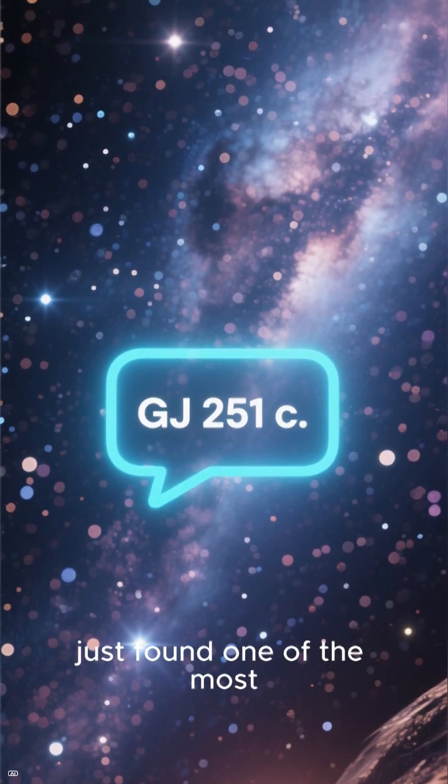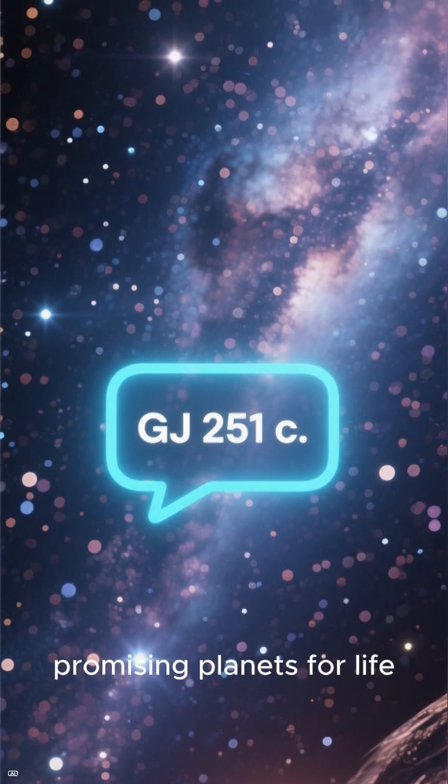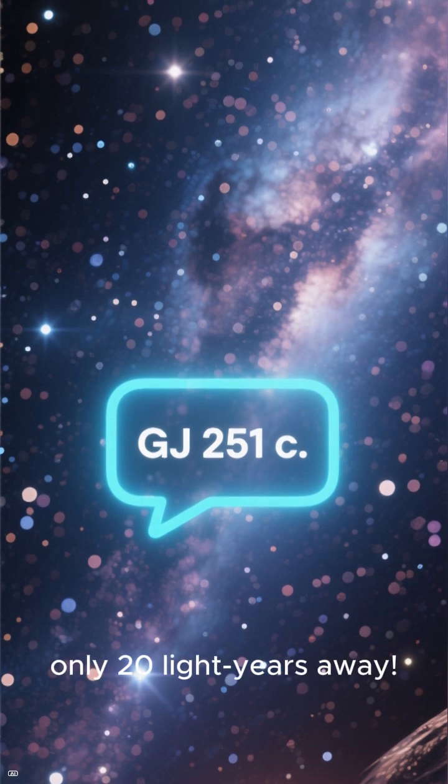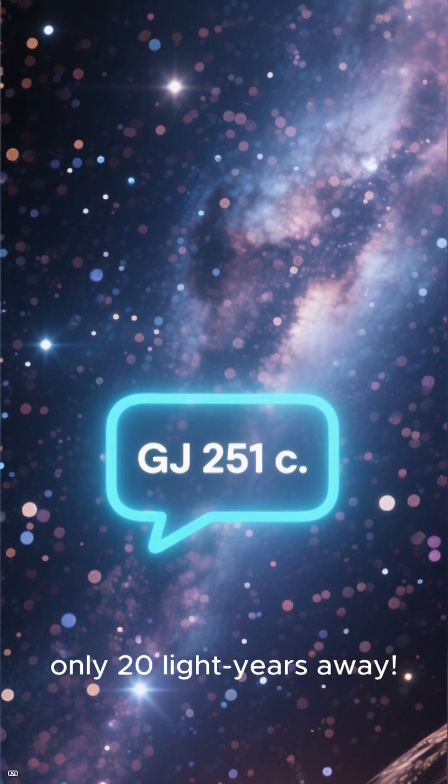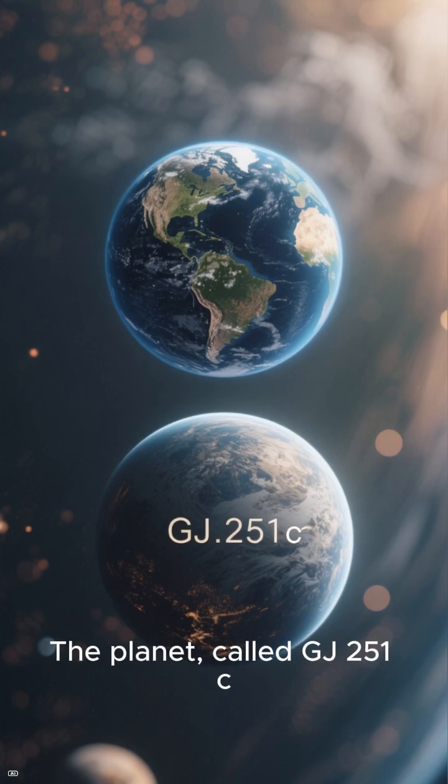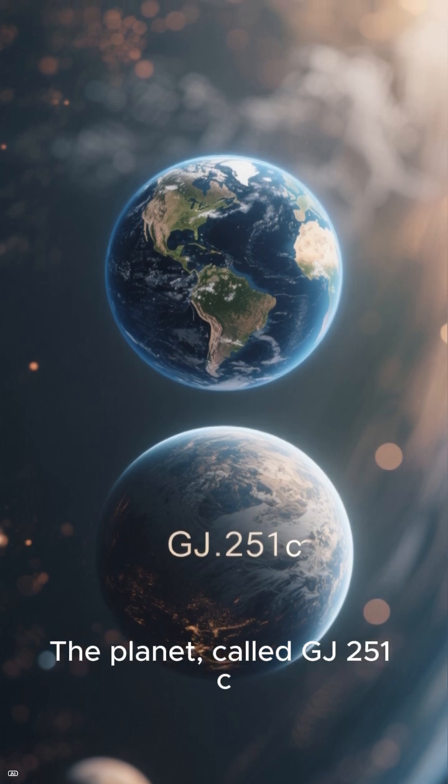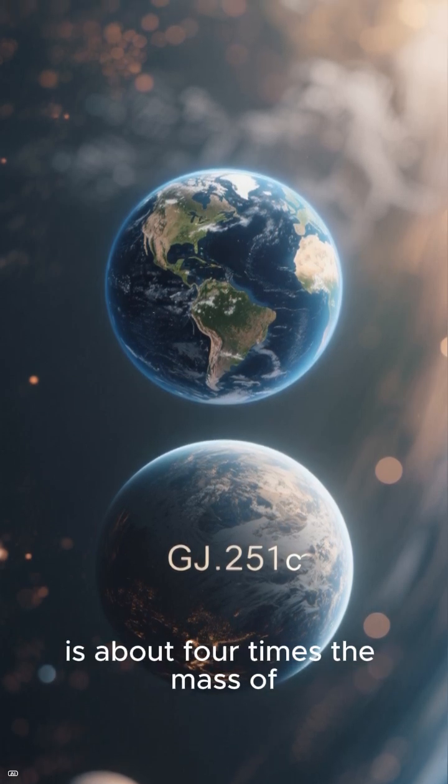Astronomers have just found one of the most promising planets for life: a super-Earth only 20 light years away. It might be just right for liquid water. The planet, called GJ 251c, is about four times the mass of Earth.